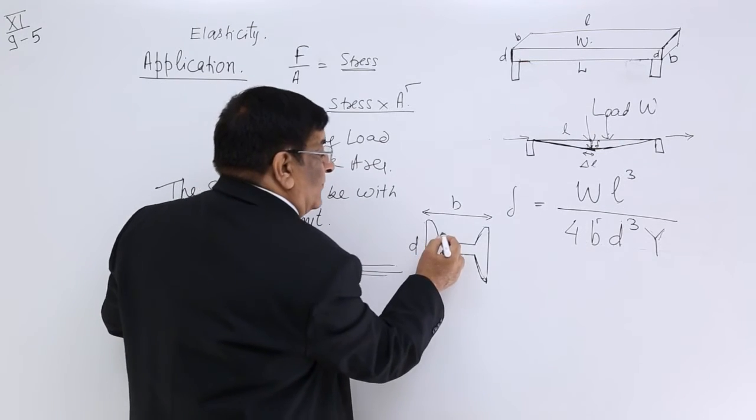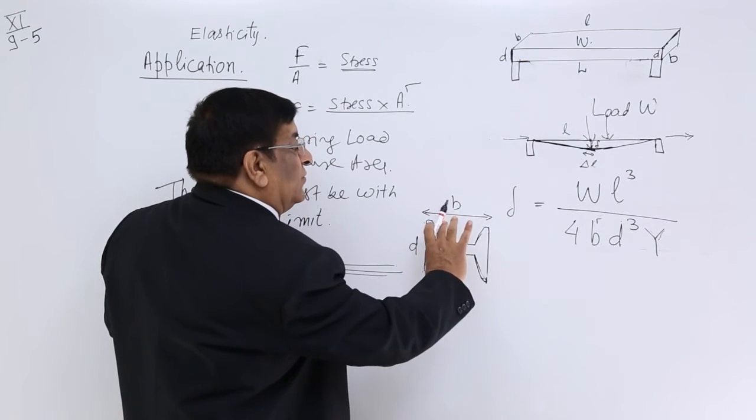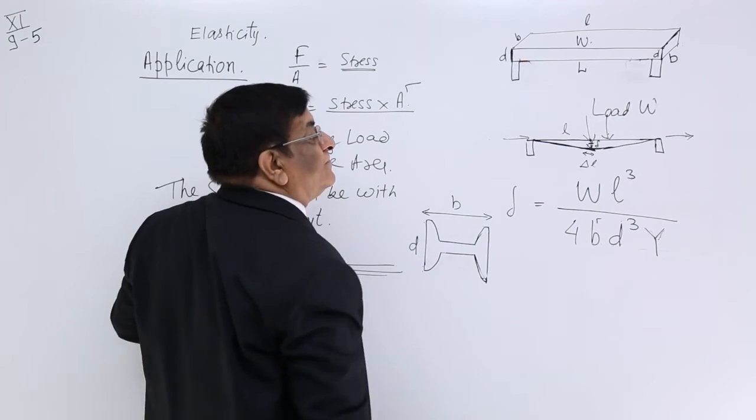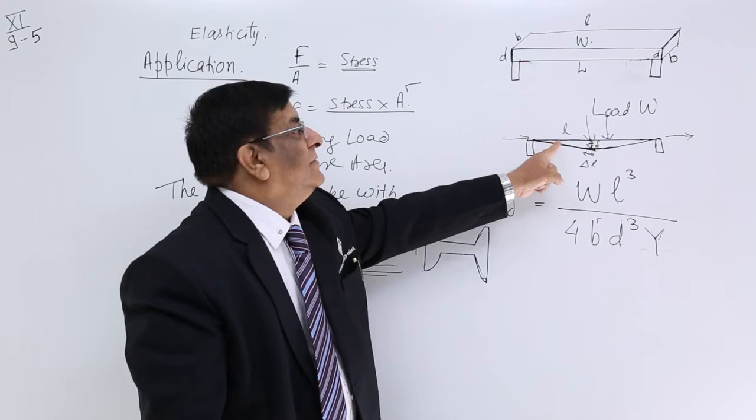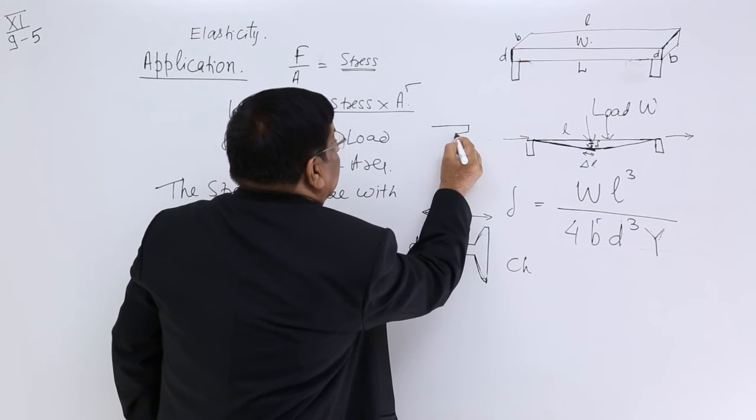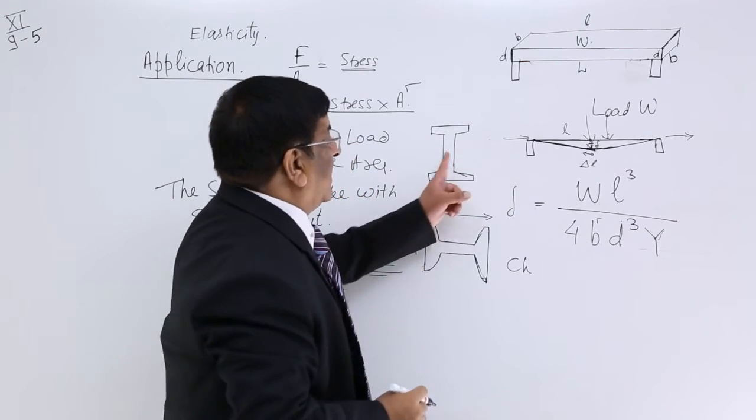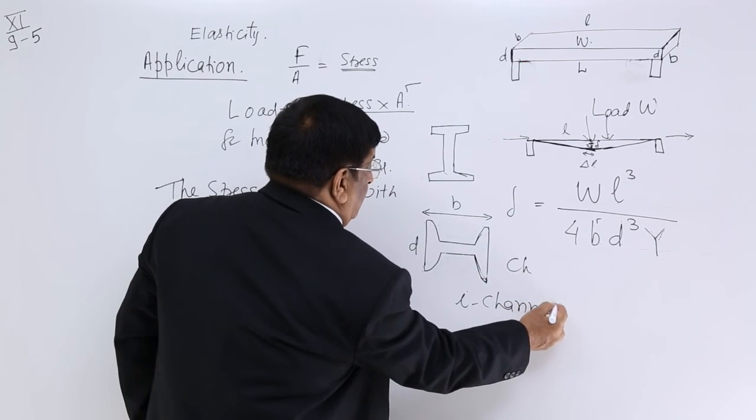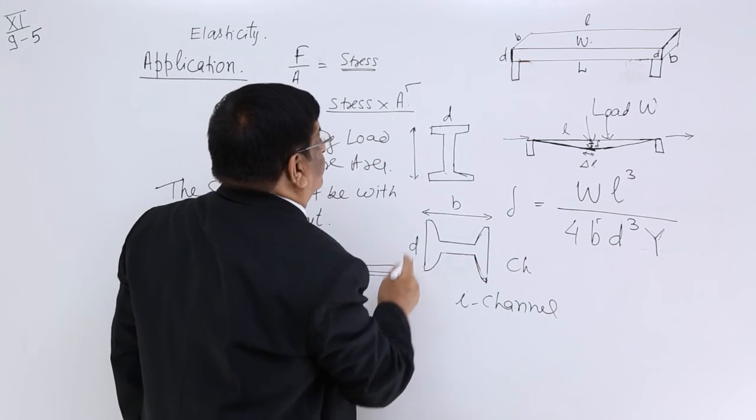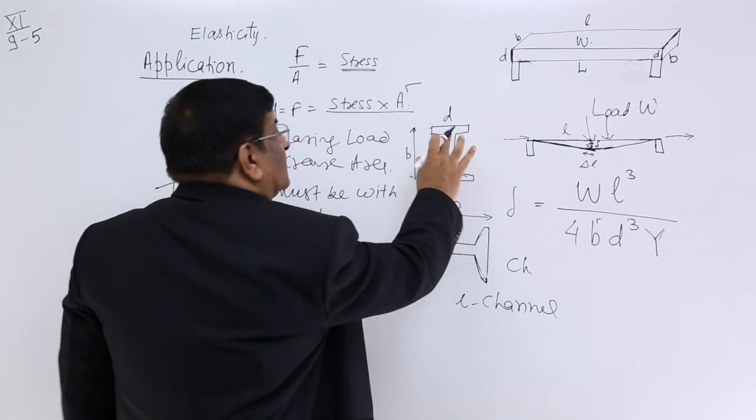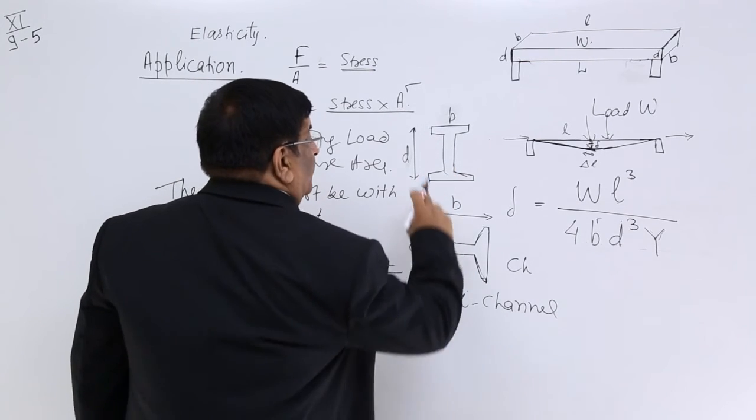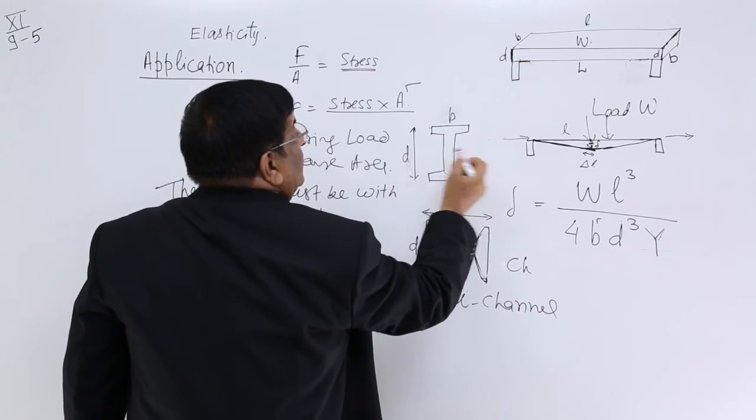So in place of using so much steel, I use a very small quantity of steel, keeping this D very large, so that the depression becomes very small. So this is how we make the bridges with help of channel. And this is, if you put it like this, it will appear as this way. This appears letter I, so we call it I channel. So we are using I channel. This is D, this is B. If we put it this way, then this is D and this is B. In this case, D is very large. So if this is D and very large, the depression will be less.